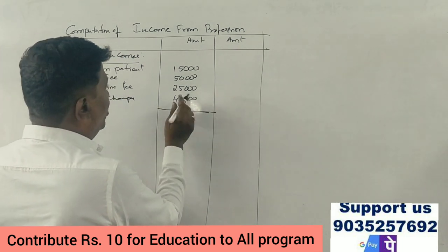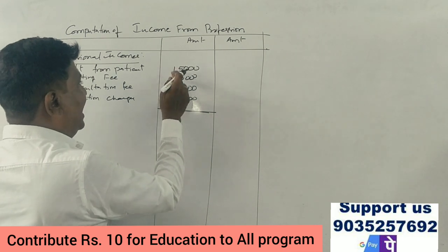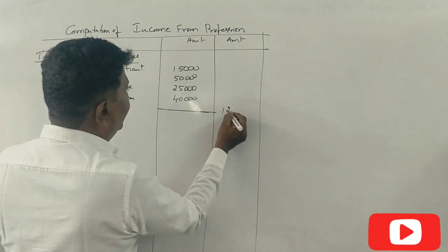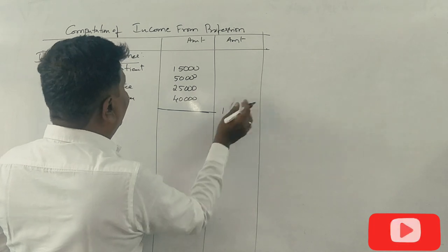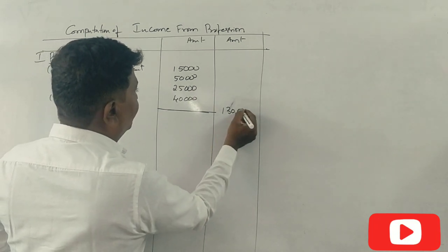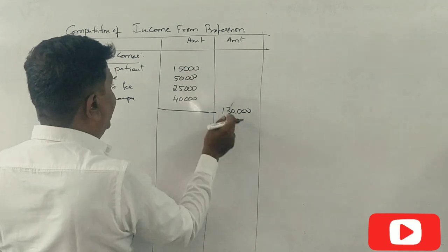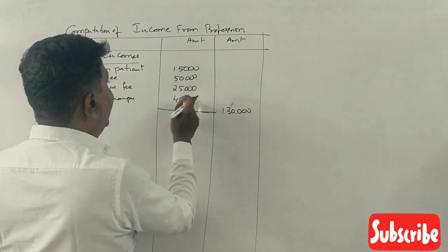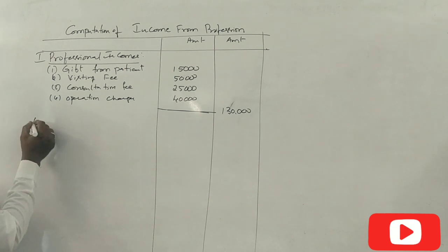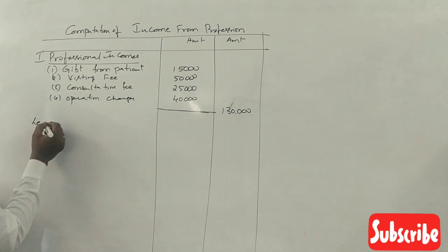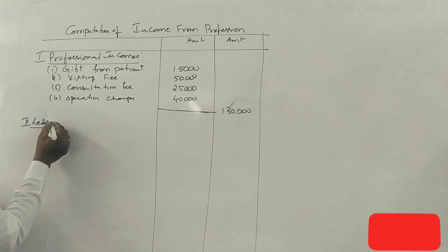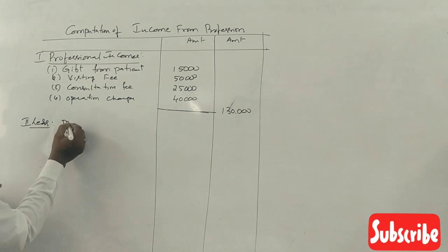The totals are: 90,000; 1 lakh; 1 lakh 20,000; 1 lakh 25,000; 1 lakh 20,000; totaling 1 lakh 30,000. So total professional income is 1,30,000 rupees. Now we subtract professional expenses.